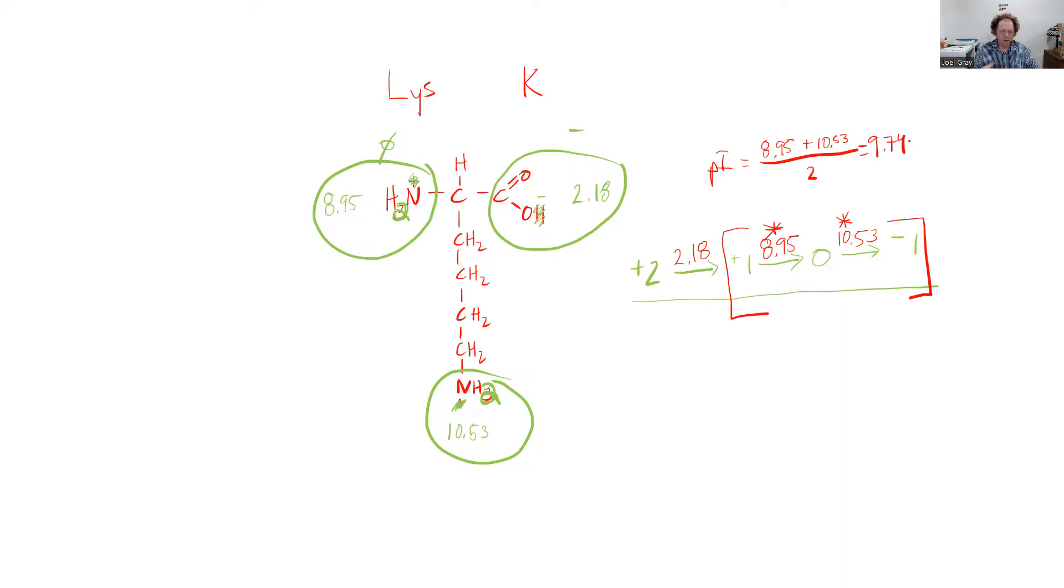That number is significant. The pI, the isoelectric point, is significant because that's the pH at which your molecule is going to be least soluble. That's also the point where your molecule has an overall charge of 0.